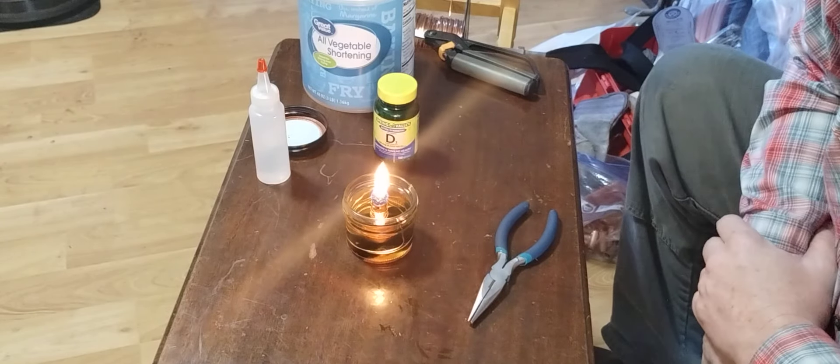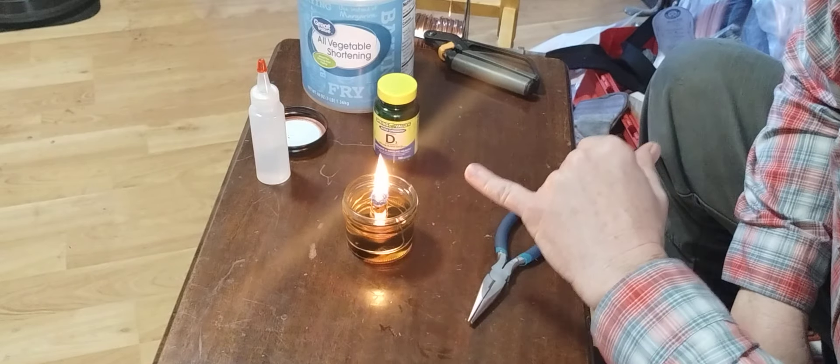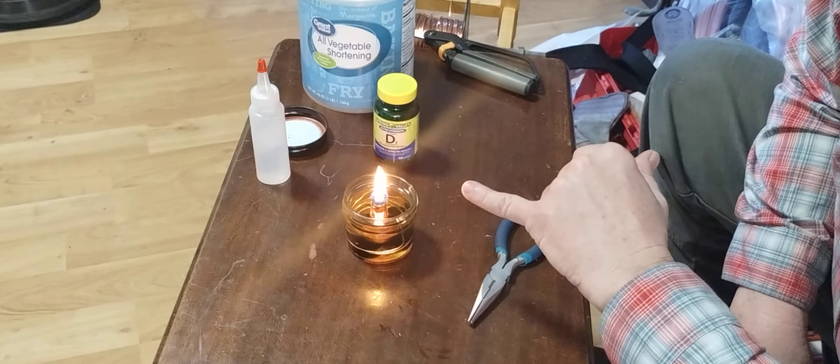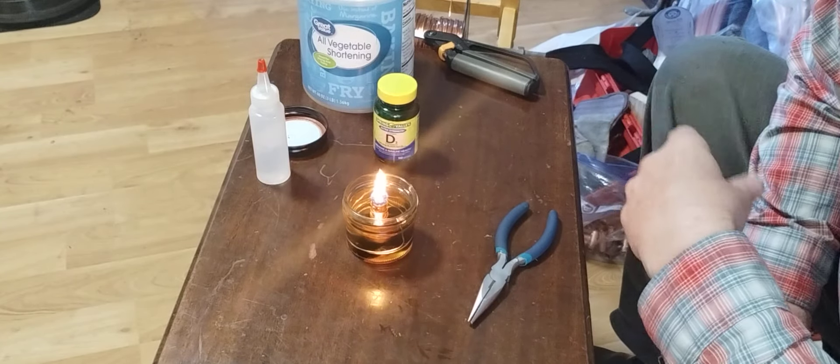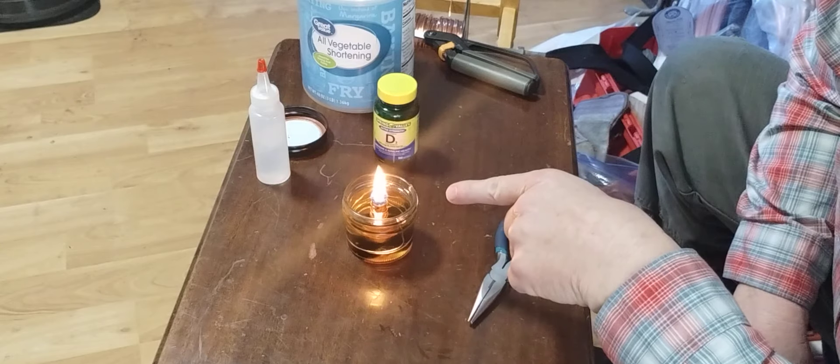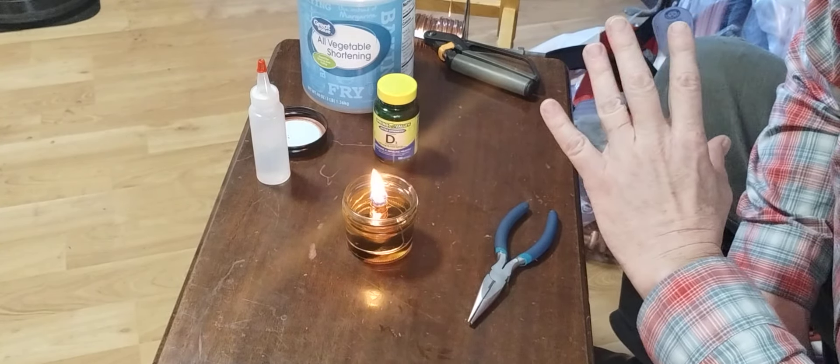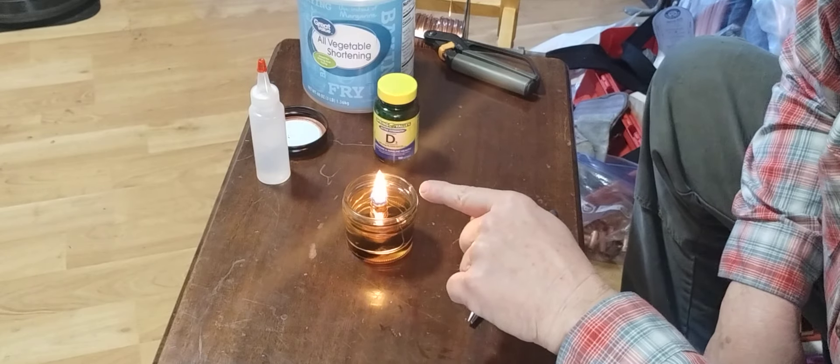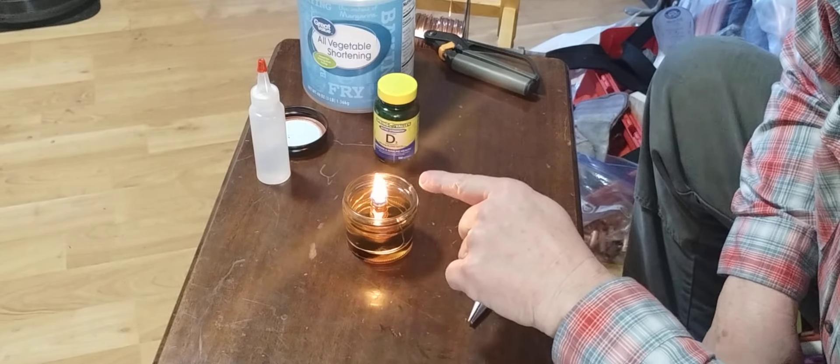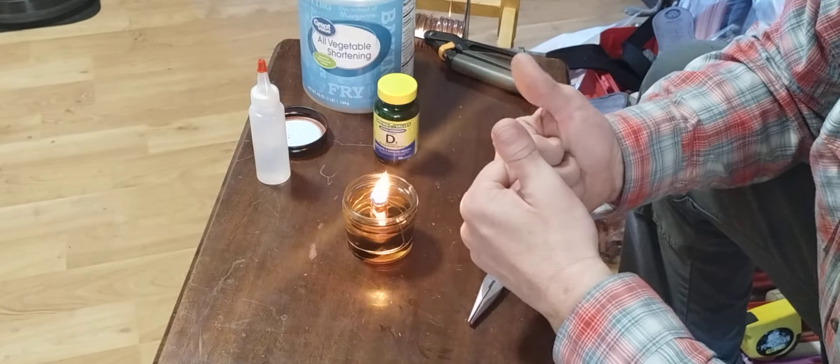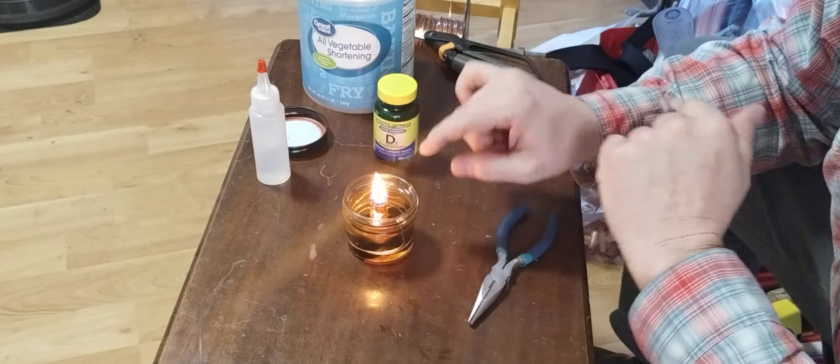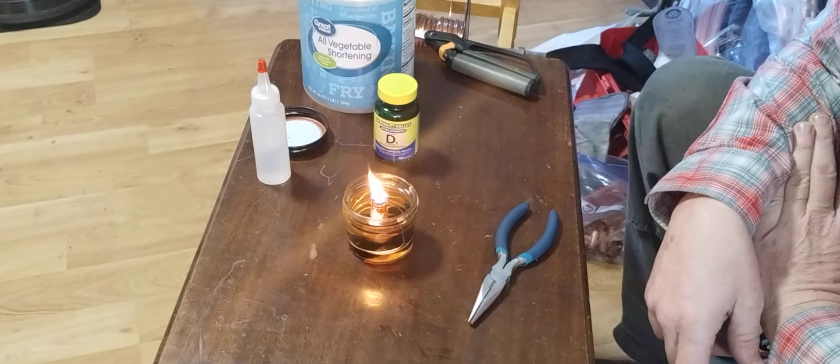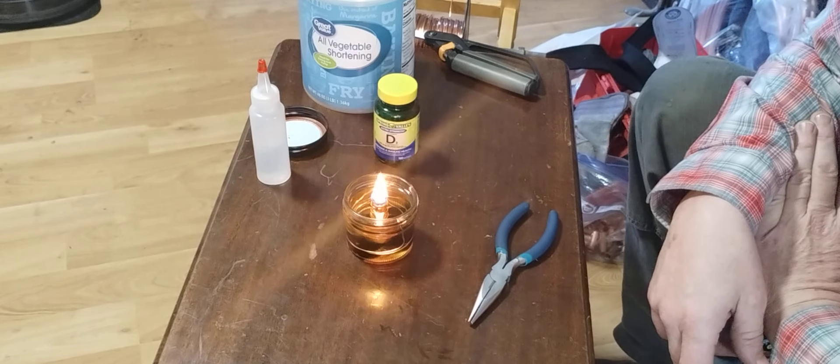Now this is the part where you adjust it. Get your flame adjusted to the right height. Then after it's adjusted to the right height, you can blow it out and solidify it, get it solid, put it in the refrigerator and make it solid. And then after it's solid, then you can light it and watch how many hours it will last and how good of a flame you have. Now this way of doing a Crisco candle gives you a guarantee good flower of a flame, beautiful flame. Actually that's really nice.